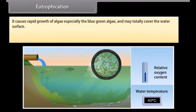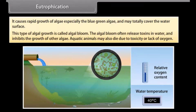Algae may totally cover the water surface. This type of algal growth is called an algal bloom. The algal bloom often releases toxins in water and inhibits the growth of other algae. Aquatic animals may also die due to toxicity or lack of oxygen.